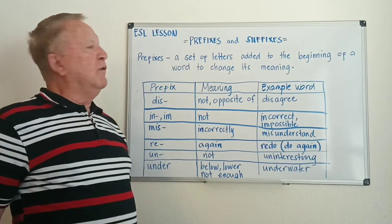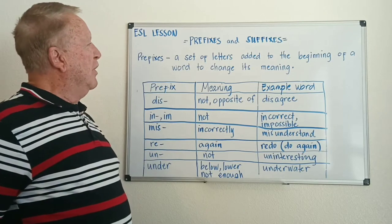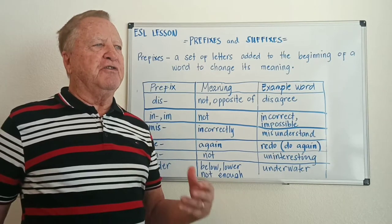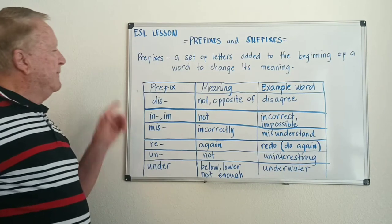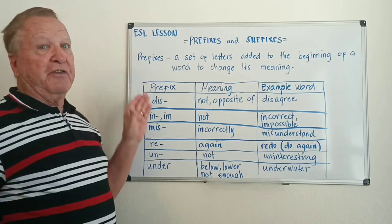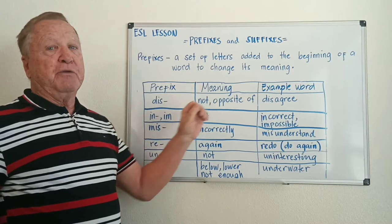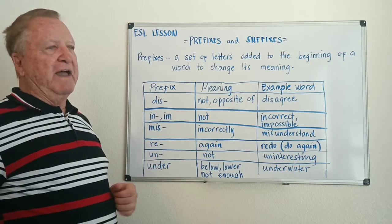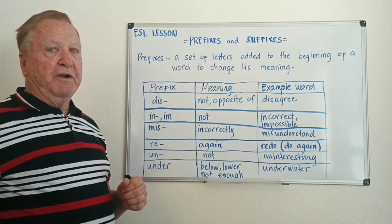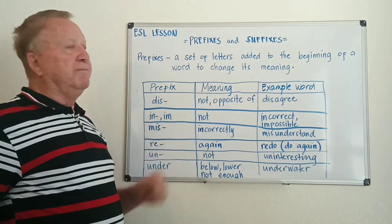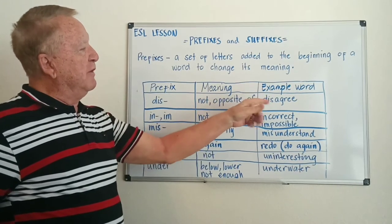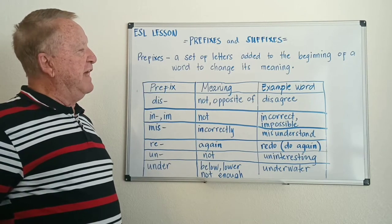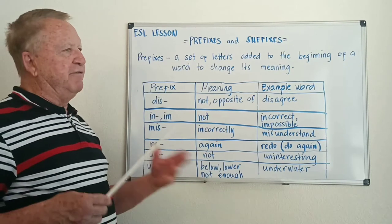A prefix is a set of letters which is added to the beginning of a word to change its meaning. Here are some of the common ones. This column has the prefix, this one has the meaning, and this one has an example. The first one is 'dis' — that would be added to the beginning of a root word. It means 'not' or 'opposite of.' An example would be 'disagree.' The root word is 'agree,' and the prefix 'dis' added to that makes it the opposite.